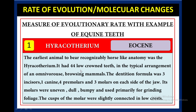Hyracotherium had 44 low-crown teeth in the typical arrangement of an omnivorous browsing mammal. The dentition formula was three incisors, one canine, four premolars, and three molars on each side of the jaw. Its molars were uneven, dull, bumpy, and used primarily for grinding foliage. The cusps of the molars were slightly connected in low crests.